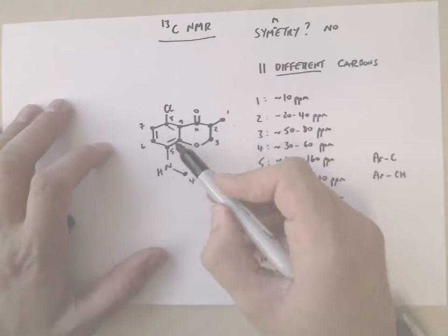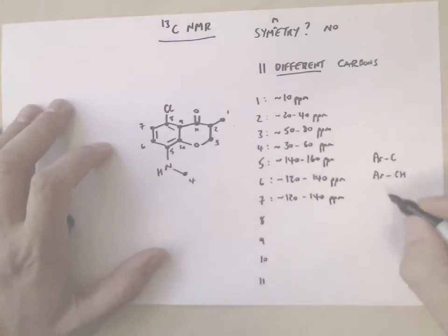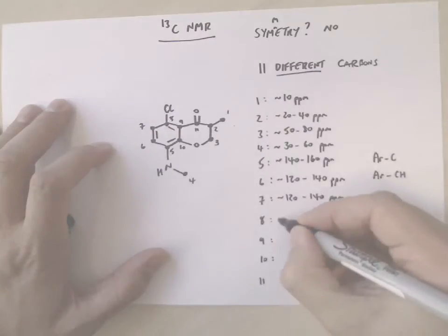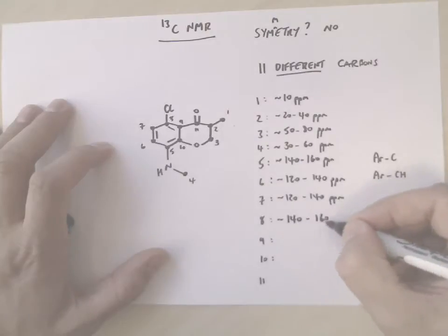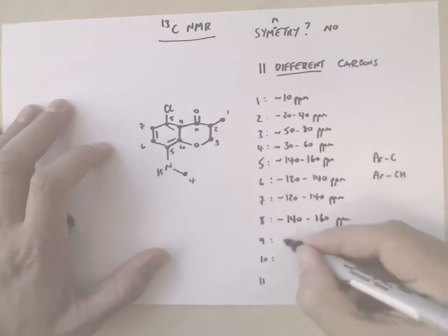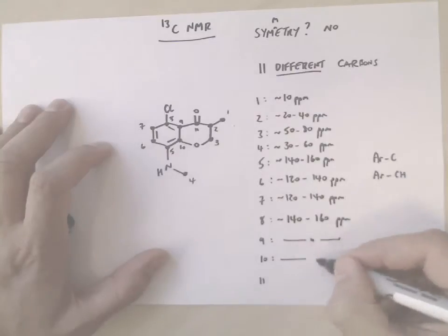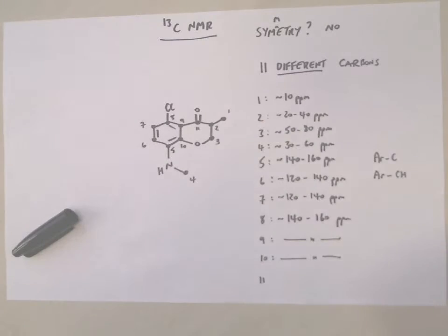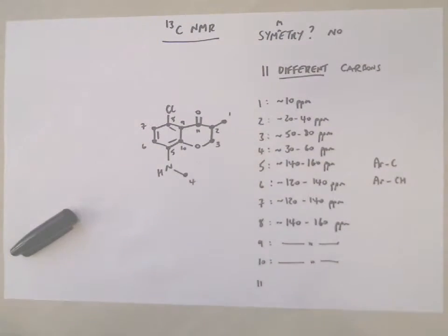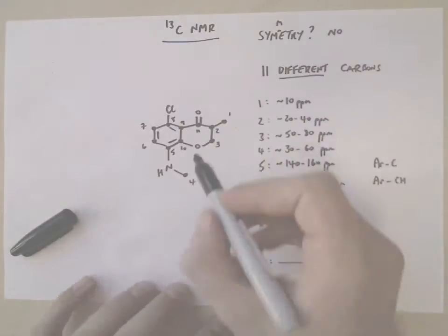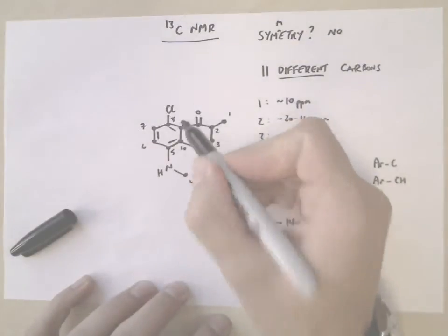8, 9, and 10 are all examples of carbons with no hydrogens on, so they will all come at between 140 to 160 ppm. And it'll be the same for carbon 9 and carbon 10. But again, the chlorine, the ketone, the ether will all have an effect on exactly where it comes.